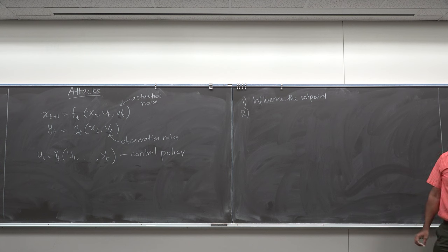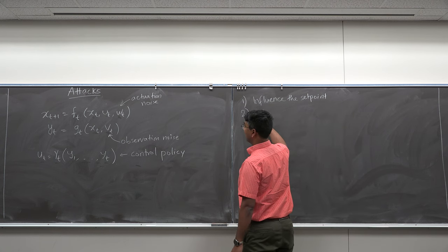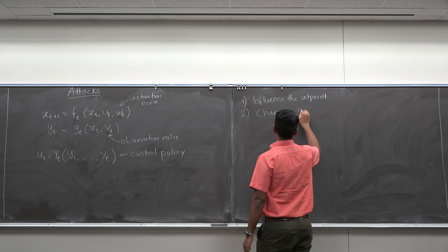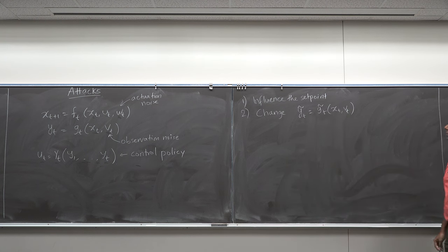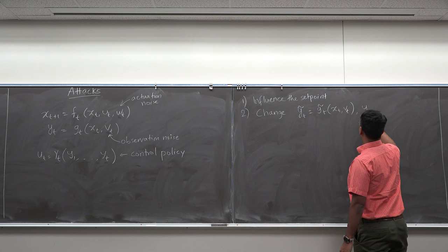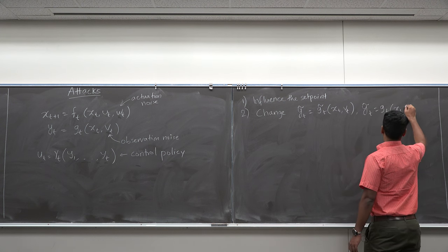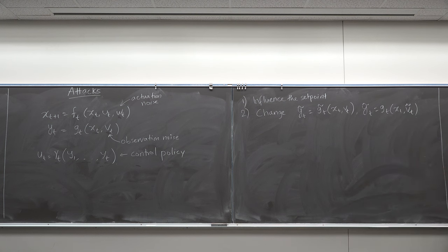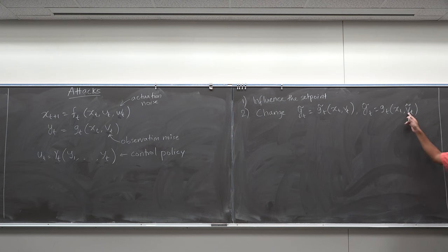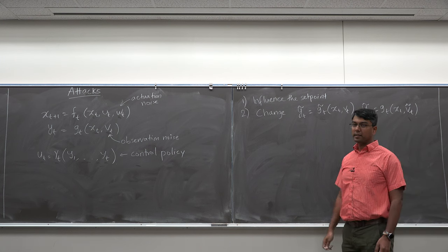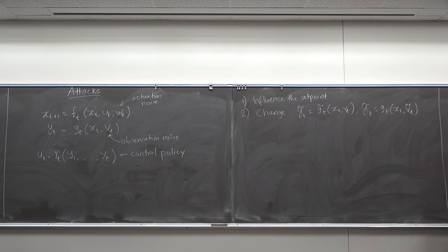Another option is to influence the measurement. You can put your hand in front of the thermostat. You can change y-tilde-t by adding more noise to the system. So you can change the observation in two ways: one is you pick a different observation function itself; the other is you add higher-intensity noise to the observation sensor. In this case, you have a thermostat with a temperature sensor and you increase the noise around it so that it sends wrong temperature readings to the controller.